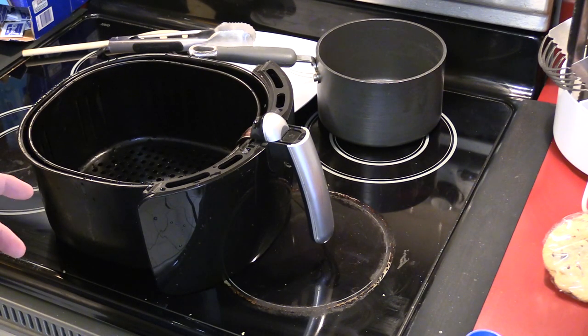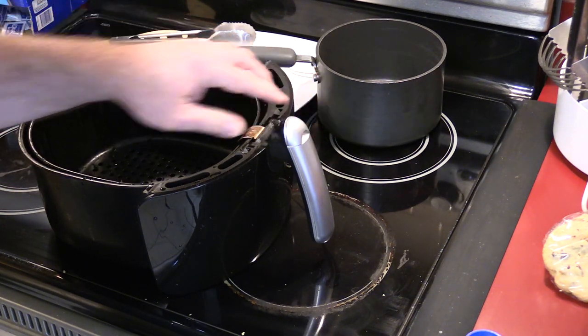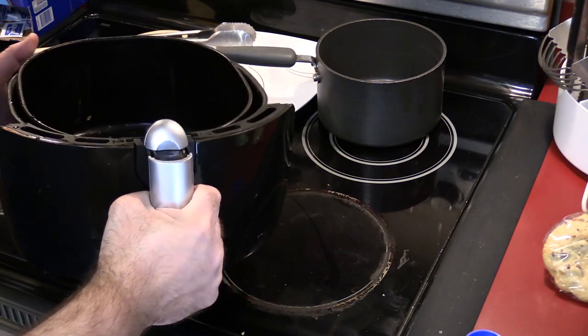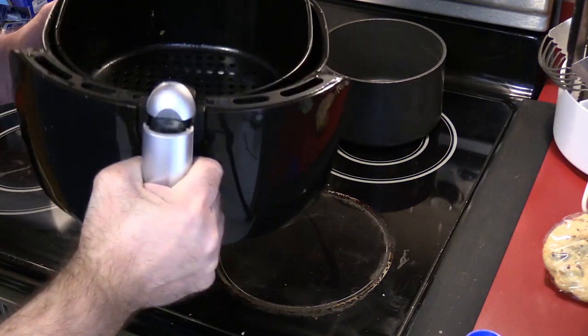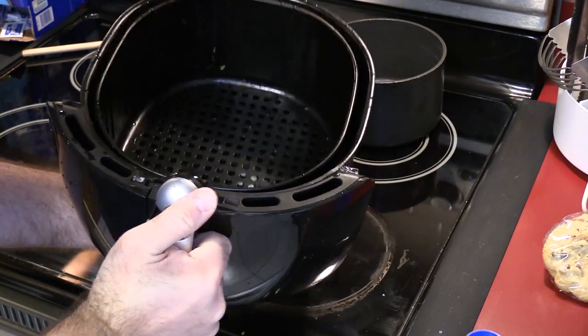So this is a GoWise air fryer, but there are many similar air fryers that have the same type of system. I think the PowerXL buttons may be the same, but basically when you pull this out of the air fryer, sometimes the basket disconnects and it falls.